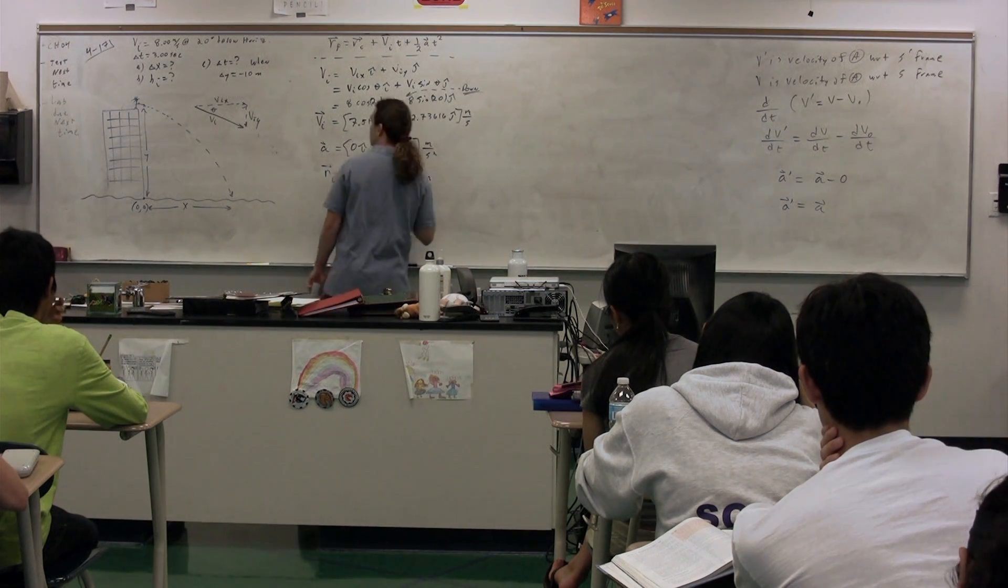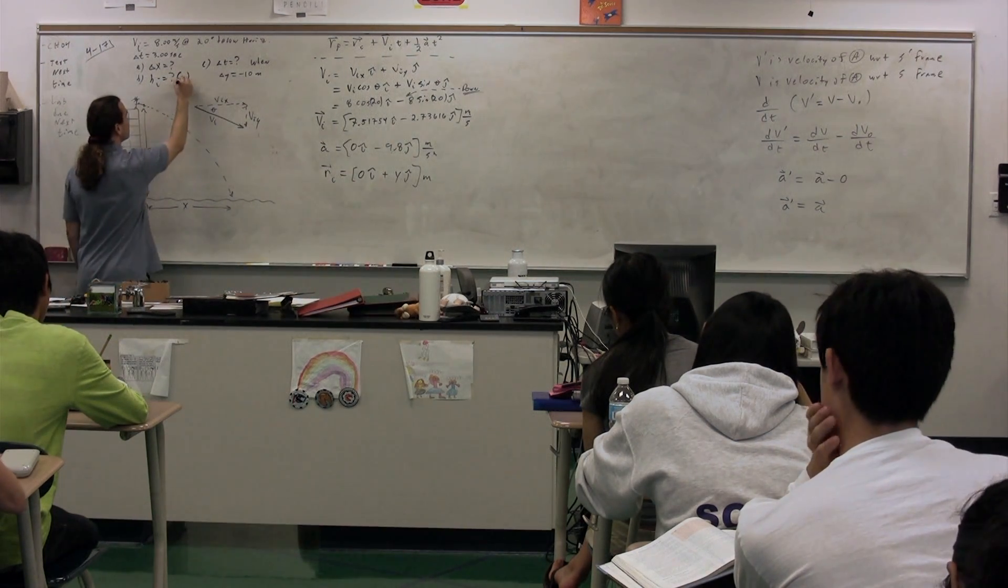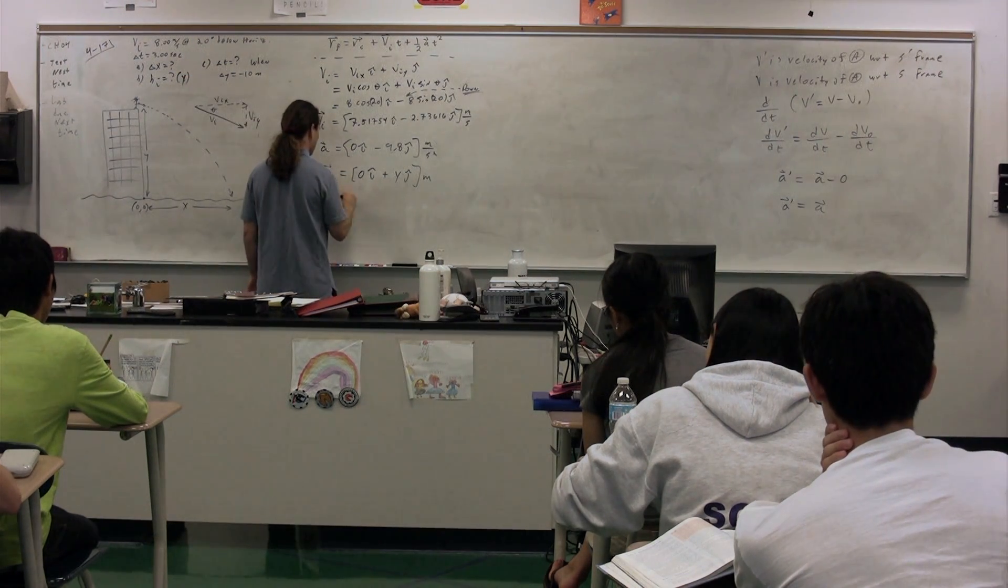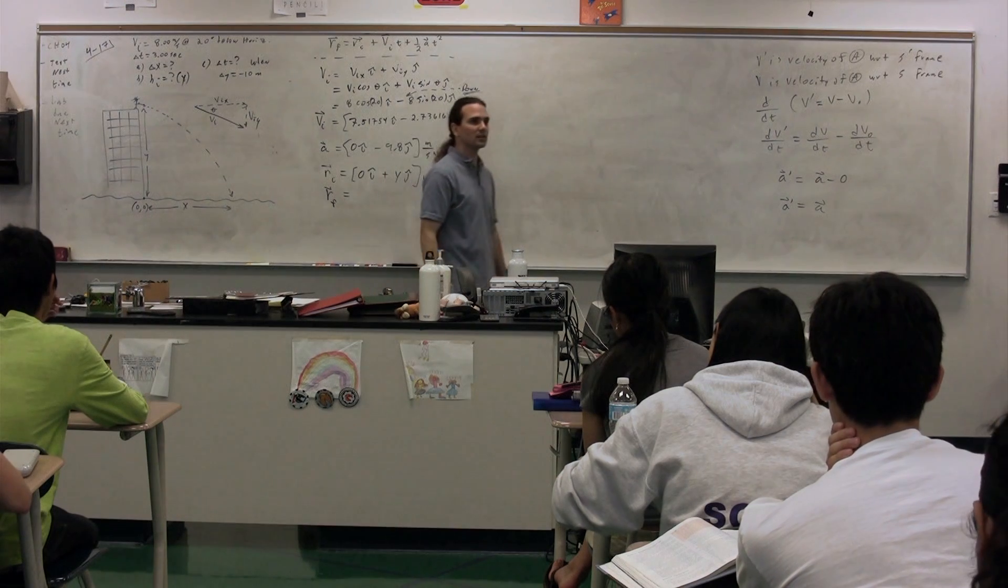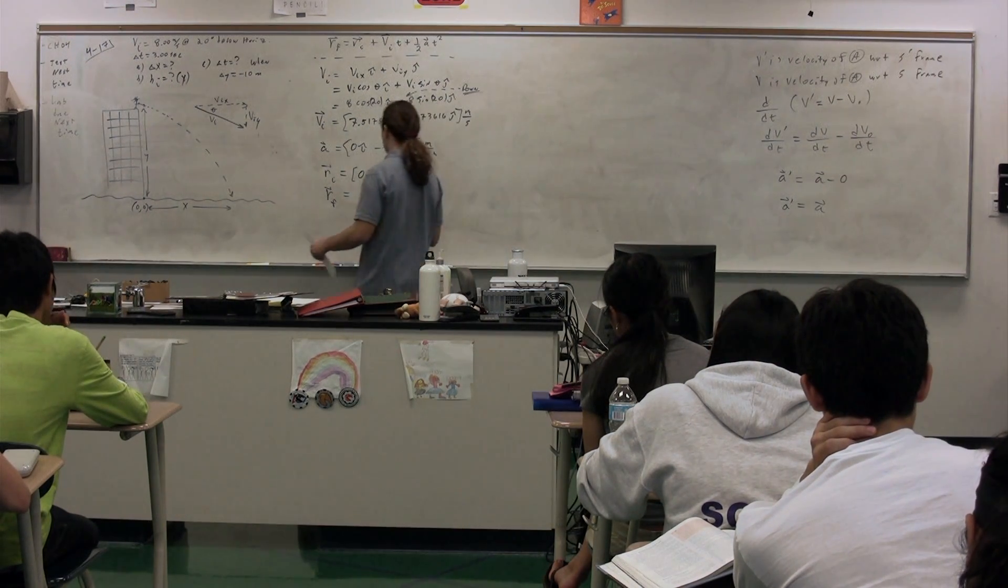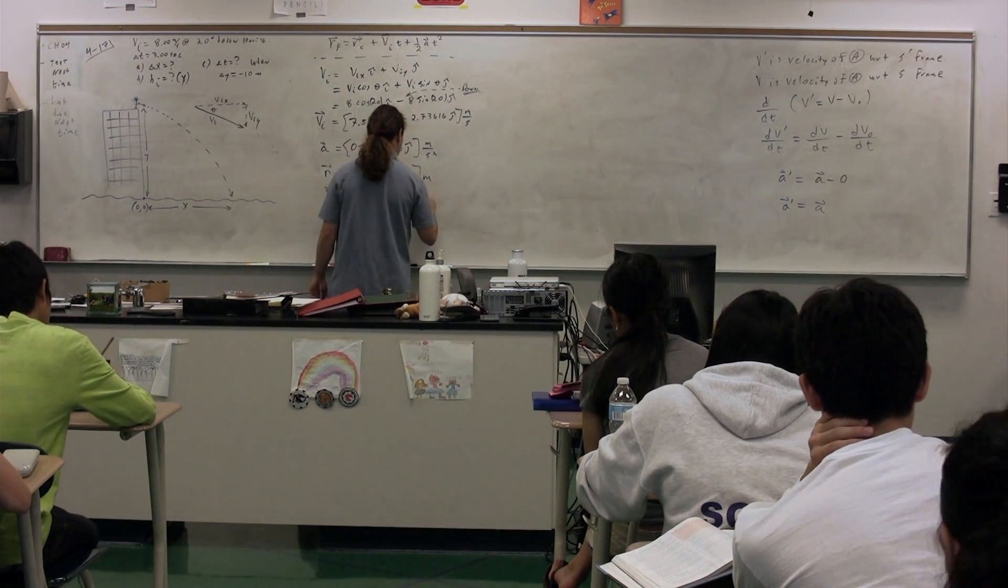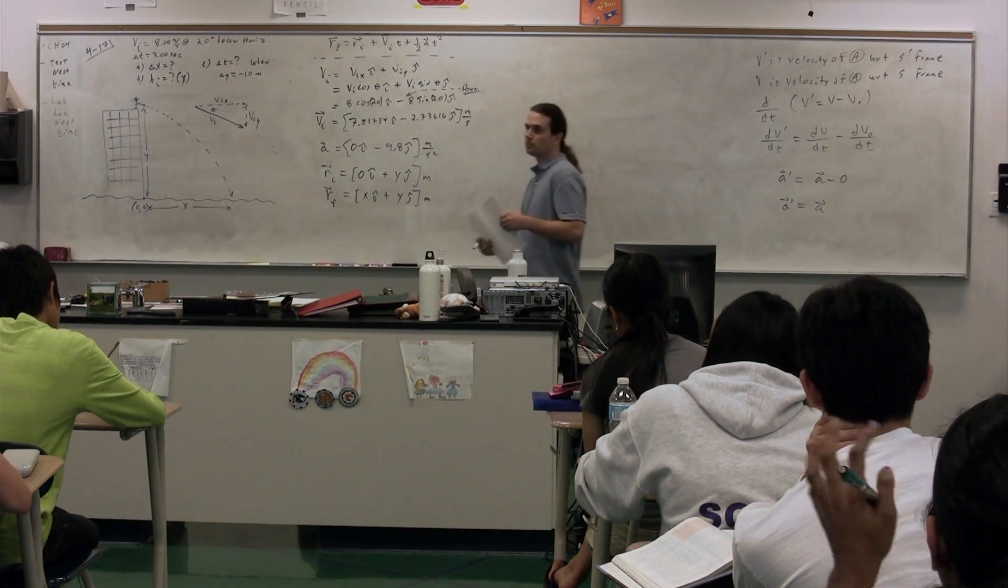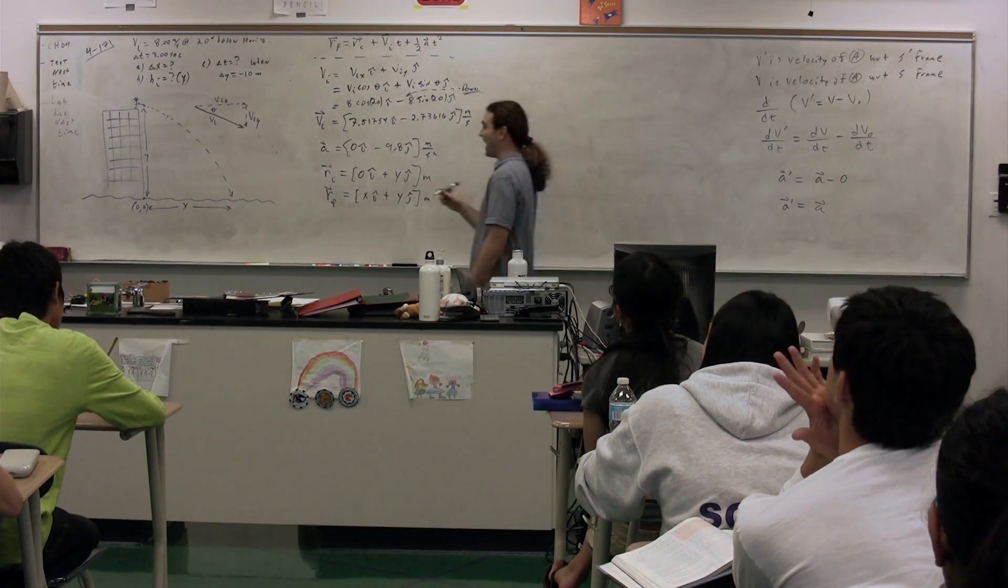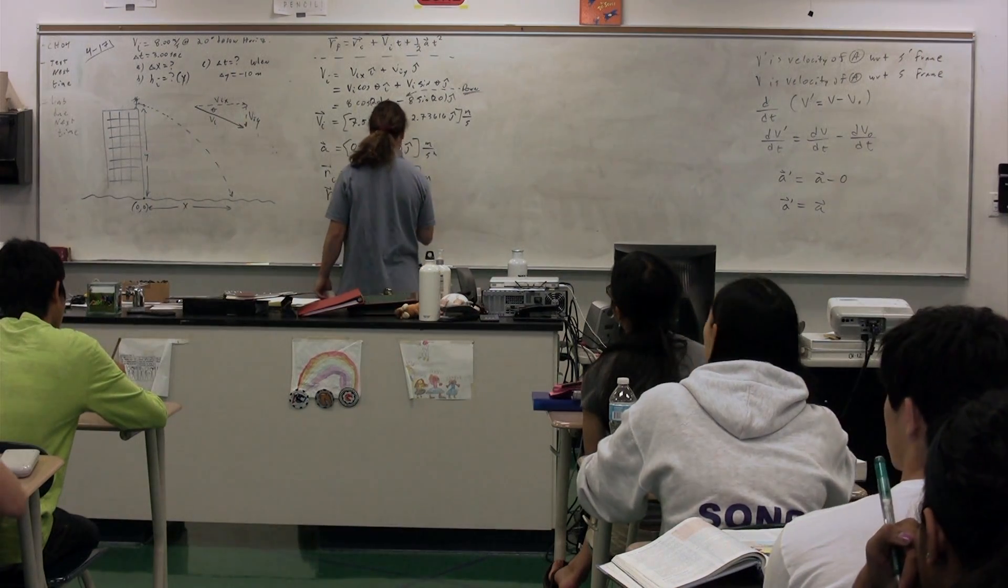In other words, we're looking for y for part b. What is our position final? What's the position final of this object? Naveen? X i plus y j. Okay. Zero j. Zero j. Because at the end, it ends with a y value of zero. So this is zero j.